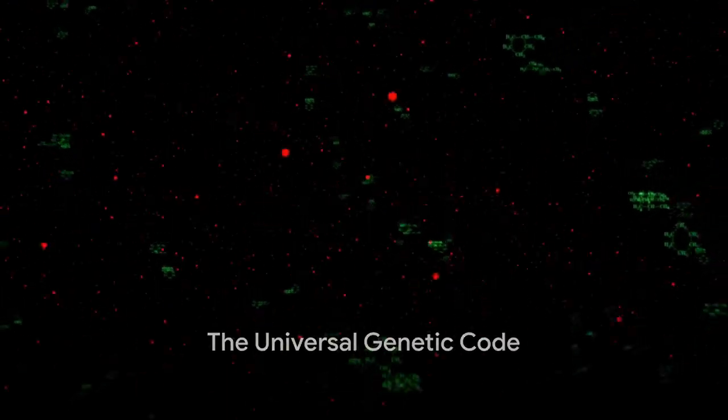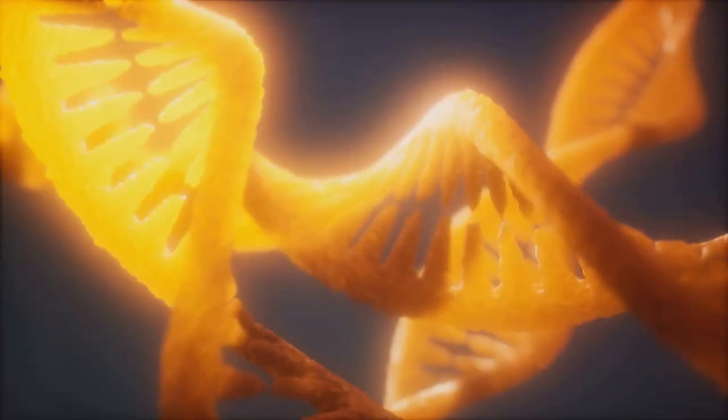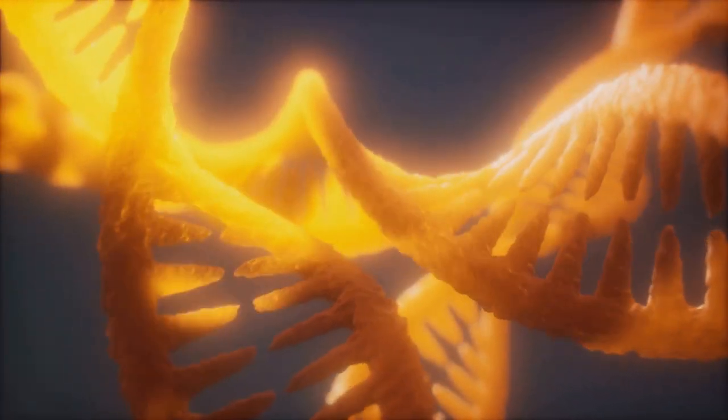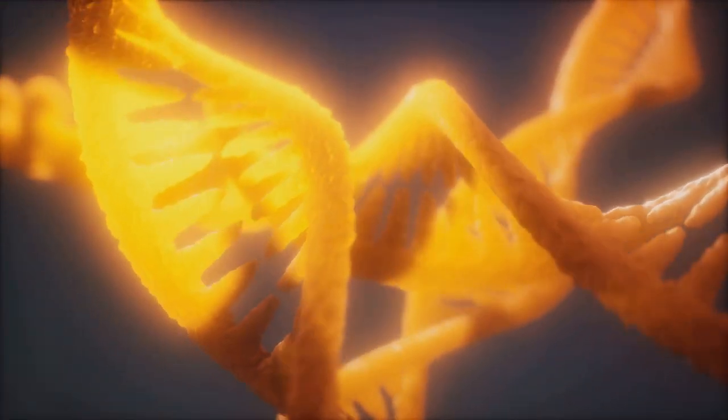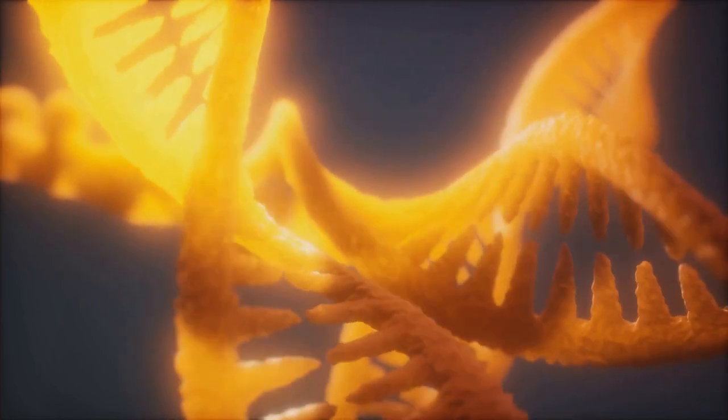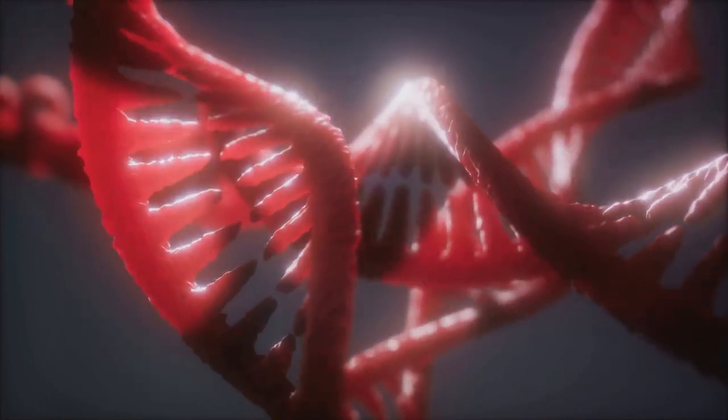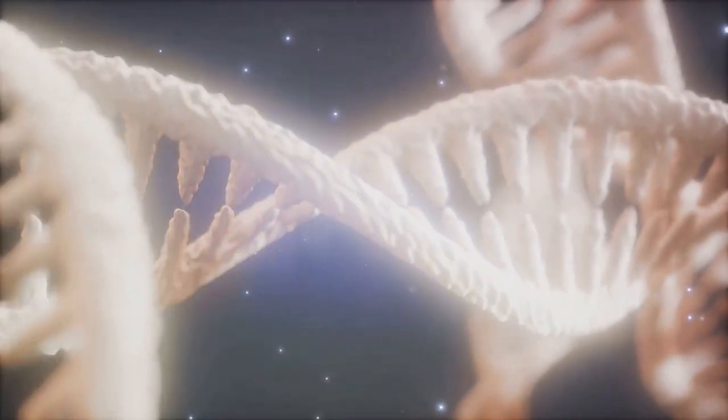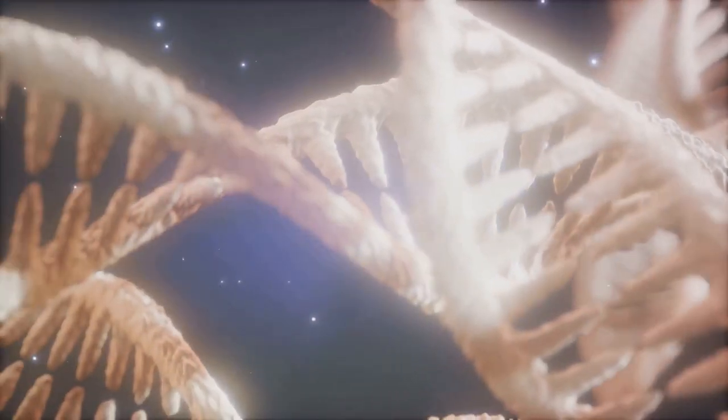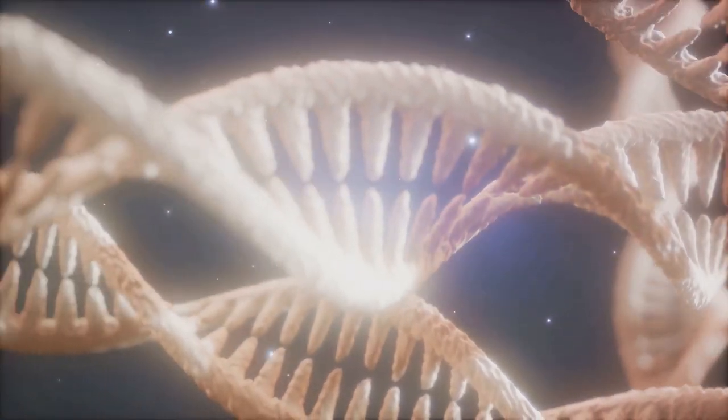Here's a mind-blowing fact. The genetic code is universal. It's the same for all life on Earth. From the humblest bacteria to the towering trees, from the smallest fungi to the largest mammals, we all share the same genetic language. This language is written in the four-letter alphabet of DNA: A, C, G, and T. These letters combine in countless ways to form the instructions for life as we know it.